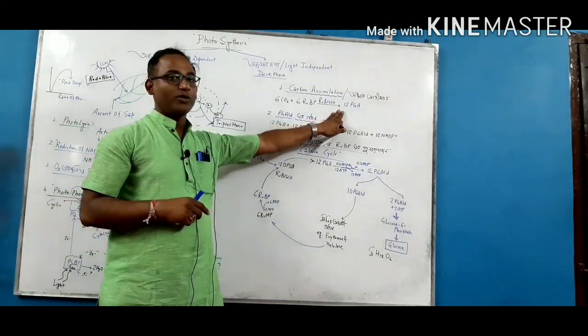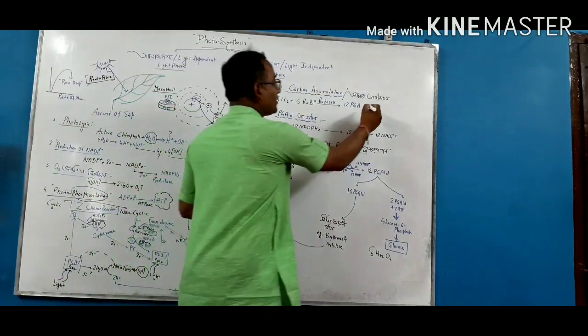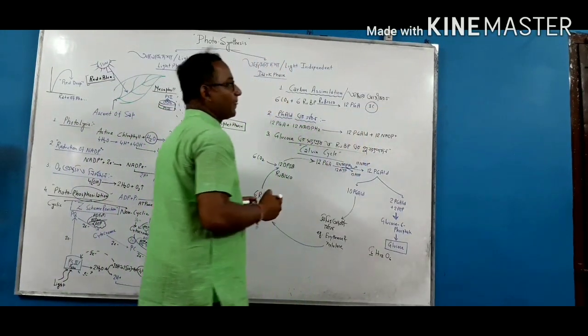So we can see that in the first time we can see PGA, phosphoglyceric acid. PGA is a 3C compound.